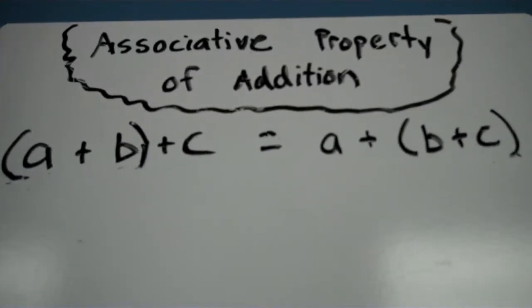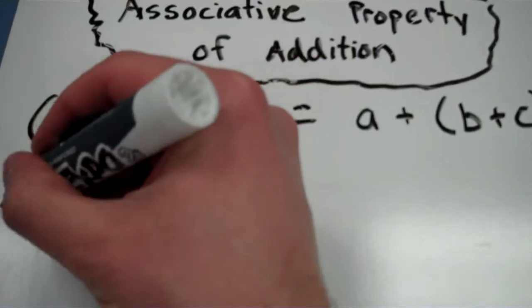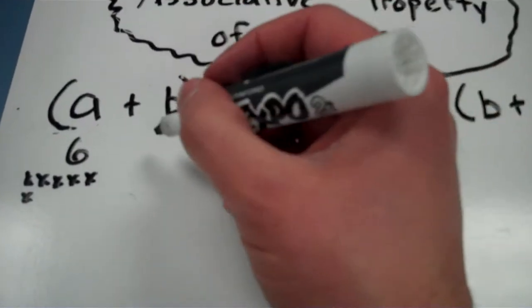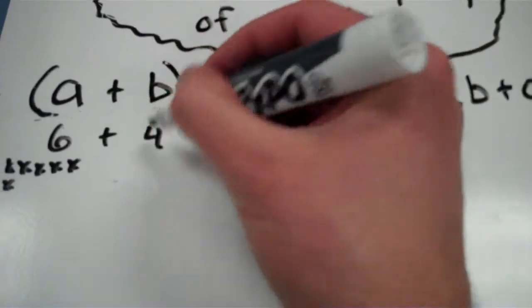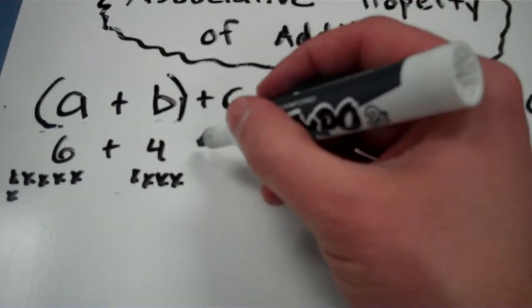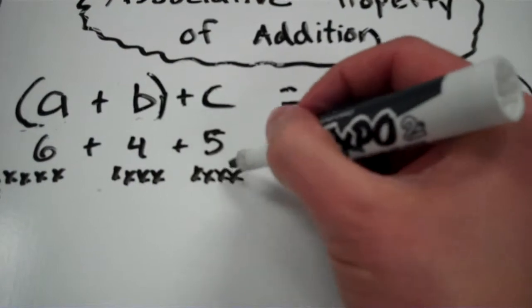Let's see if it works. I'll use 6 for a. 1, 2, 3, 4, 5, 6. I'll use 4 for b. And I'll use 5 for c. 1, 2, 3, 4, 5.